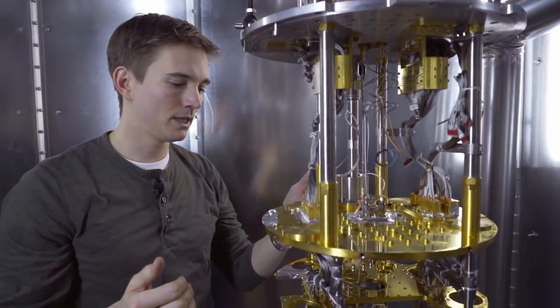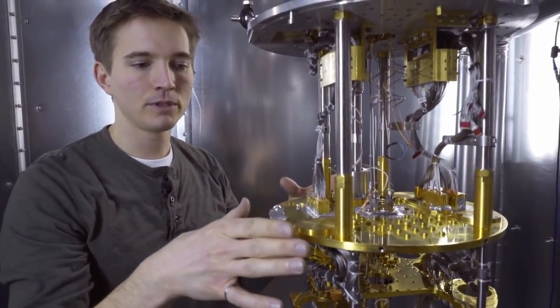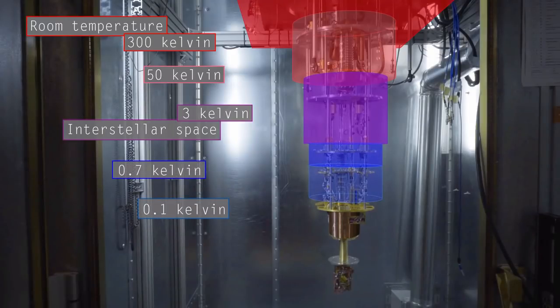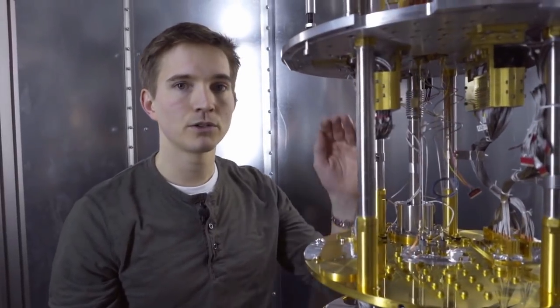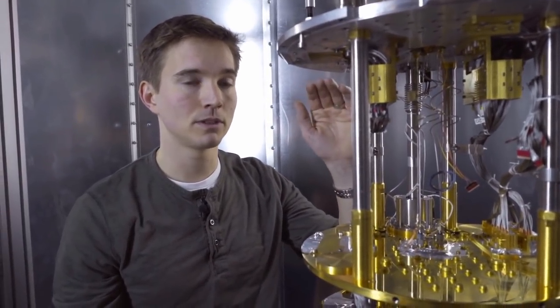And then a second refrigerator, a dilution refrigerator, takes us in this plate from 0.7 Kelvin, 0.1 Kelvin, and then down to 0.01 Kelvin. When the system is operating, this plate and everything mounted below it is 10 thousandths of a degree above absolute zero, which is more than 100 times colder than interstellar space.